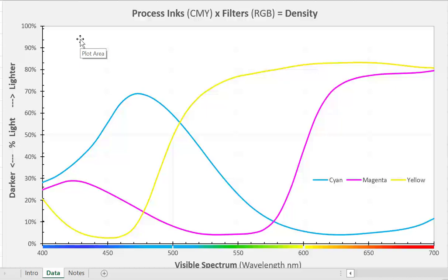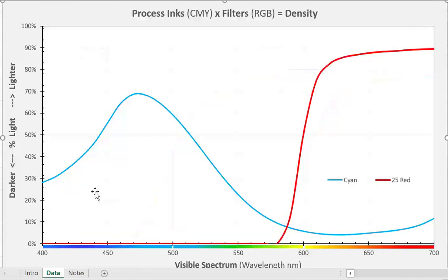Now if we want to look at density, we want to use a filter that is the complementary opposite of the ink. So where the ink absorbs light, we want the filter to transmit light. The ink is absorbing one-third. We want that filter to be transmitting light in that same one-third. Here is cyan ink reflecting blue and green for cyan.